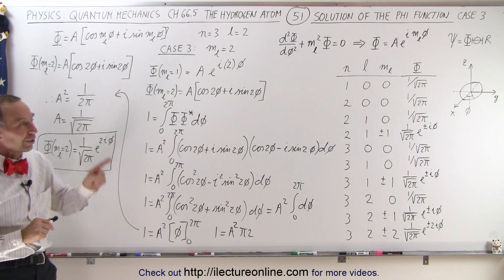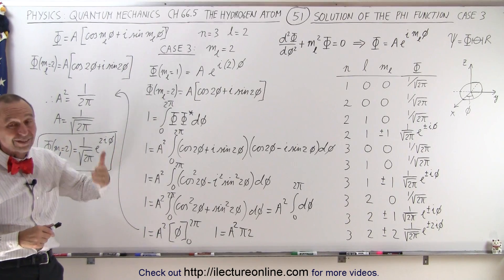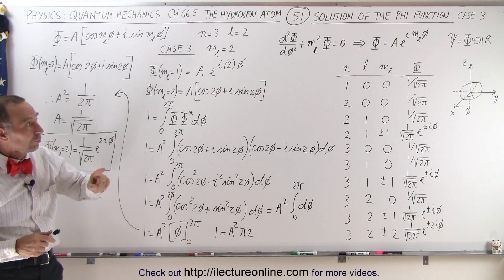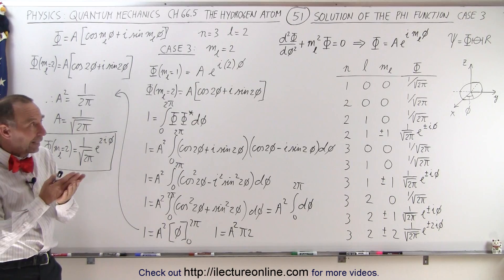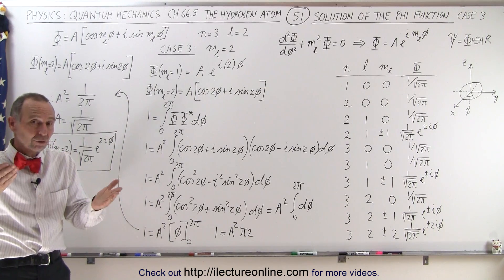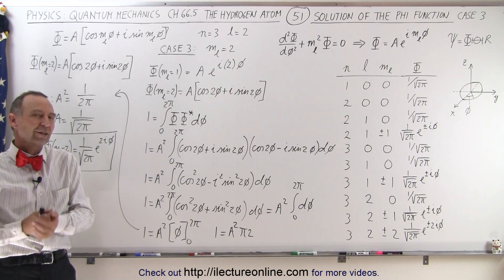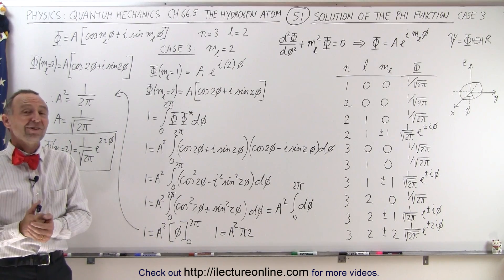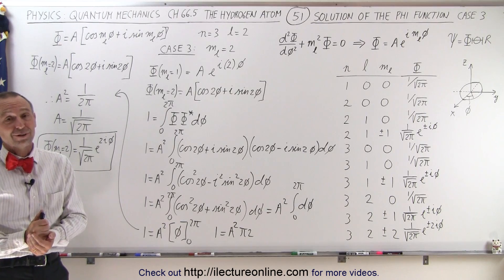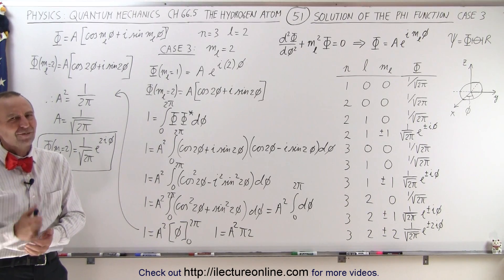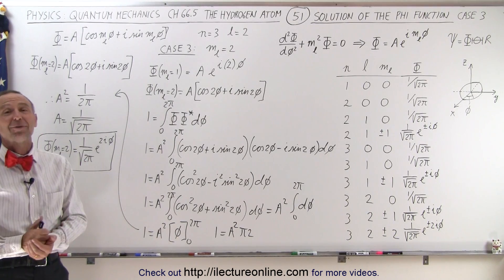Now we have to handle the other two functions. Again, we need to find the general solution to the other two functions. Then we'll write in terms of some constant times that solution. Then we have to normalize each of those functions to find the value of the constants. And I think you're beginning to see the pattern. That's how we solve the Schrödinger equation for the hydrogen atom. Not a simple task, but you can see how it's done.